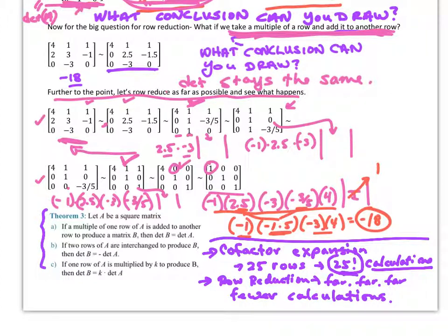So theorem 3 tells us: Let A be a square matrix. If a multiple of one row of A is added to another row to produce matrix B, then the determinant of B equals the determinant of A. Nothing changes. If two rows are interchanged, then the determinants are going to be the opposite sign. And then if we multiply by K, we're going to get determinant B is equal to K times the determinant of A. But if we factor out from a row, then whatever we factor out from B is going to be multiplied by that number and that's going to give us the determinant of A.